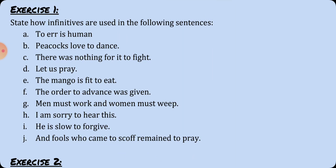Number A: 'To err is human.' Number B: 'Peacocks love to dance.' Number C: 'There was nothing left for it to fight.' Number D: 'Let us pray.' Number E: 'The mango is fit to eat.' Number F: 'The order to advance was given.' Number G: 'Men must work and women must weep.' Number H: 'I am sorry to hear this.' Number I: 'He is slow to forgive.' Number J: 'And fools who came to scoff remained to pray.'